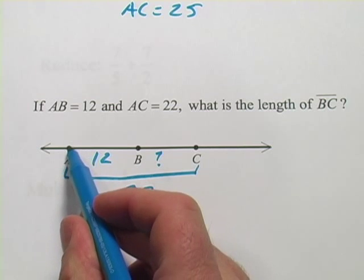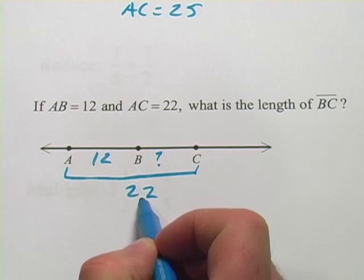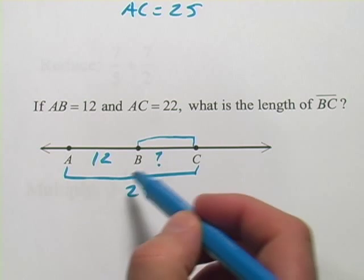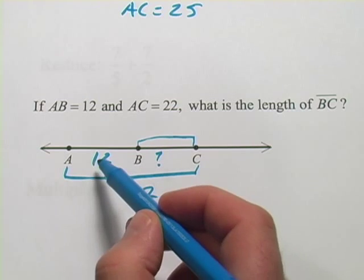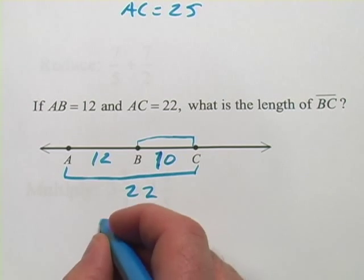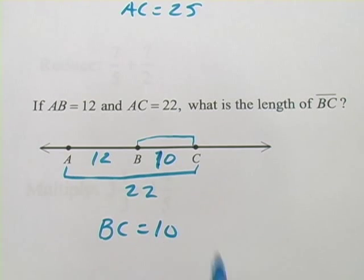Well, if you subtract this distance off of the whole, what is left would be this distance. So that's what we're going to do. We're going to take 22, the whole distance, minus 12. That gives you 10. So this is 10. So BC equals 10.